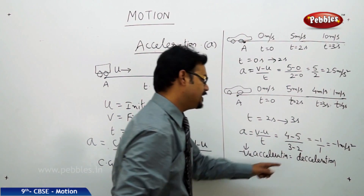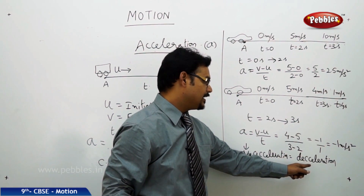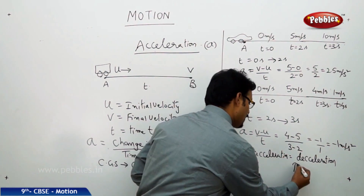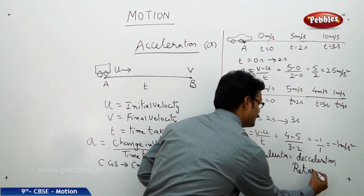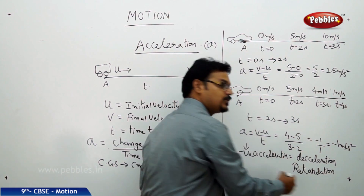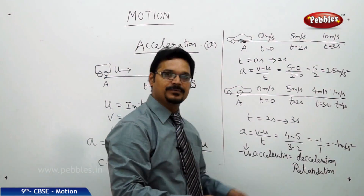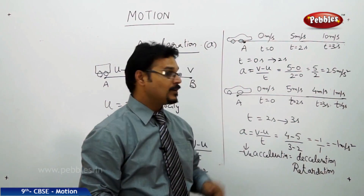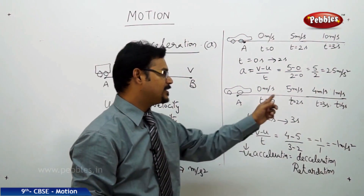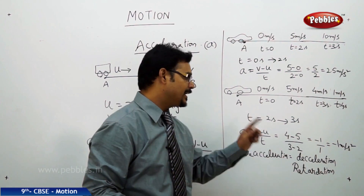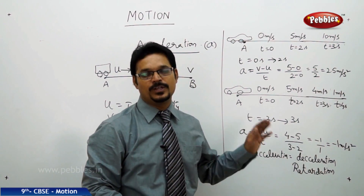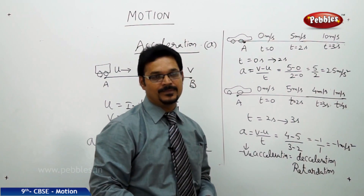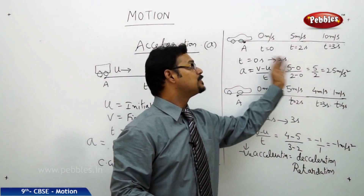So that is why it is called negative acceleration, but it is also called deceleration — D-E-C-E-L-E-R-A-T-I-O-N. Sometimes it is also called retardation. Use whichever word you feel easier. Negative accelerations are nothing but retardations, and in this case speed decreases. Positive acceleration means speed increases.